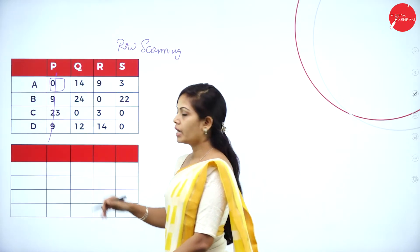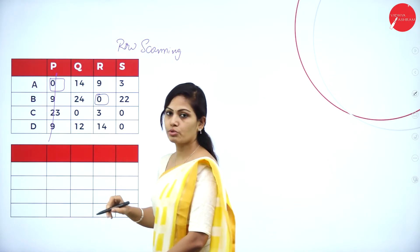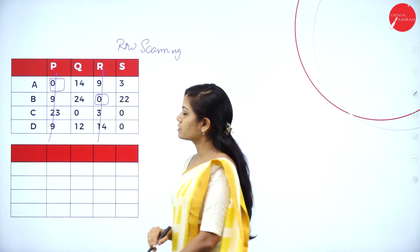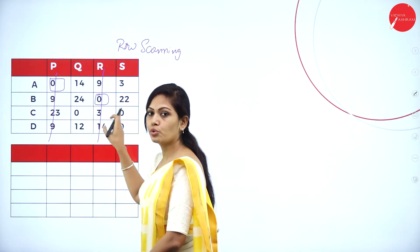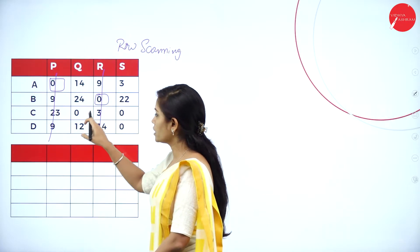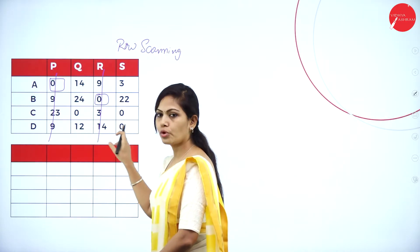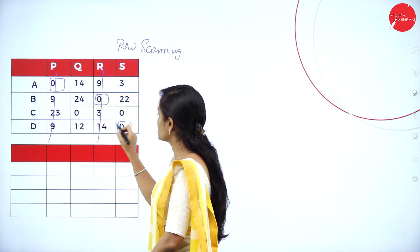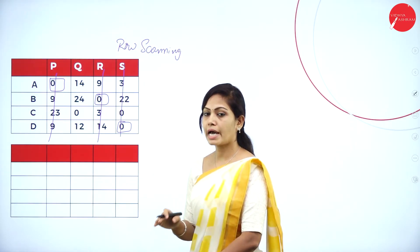If a row has two zeros, skip that row. In the second row, there is again one zero — assign it with a square box and vertical line. In the third row there are two zeros, so skip it. In the fourth row there is only one zero — assign it and put a vertical line. Row scanning is now finished.